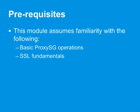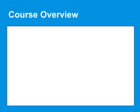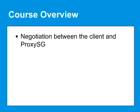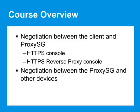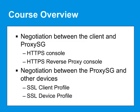As well as the fundamentals of the SSL protocol. When you have finished the SSL Traffic Management on the ProxySG course, you will understand how to configure various parameters of the negotiation between the client, such as a browser or other user agent, and the ProxySG related to an SSL session. The HTTPS console and the HTTPS Reverse Proxy console are described, and how to configure various parameters of the negotiation between the ProxySG and other devices, such as security devices or origin content servers. The SSL client and SSL device profiles are discussed.